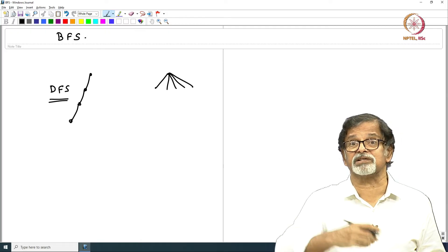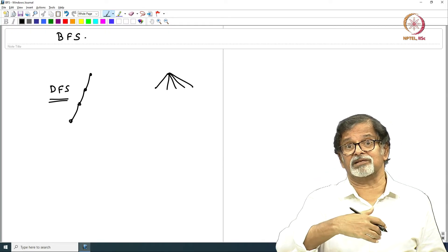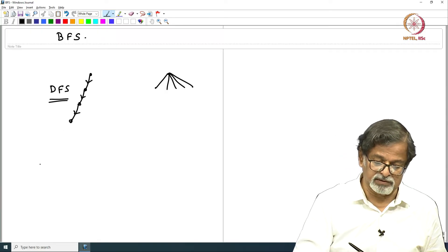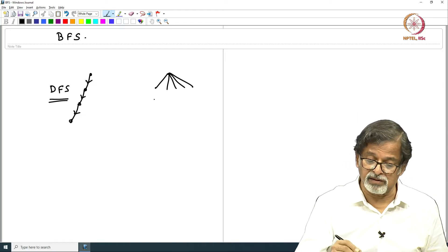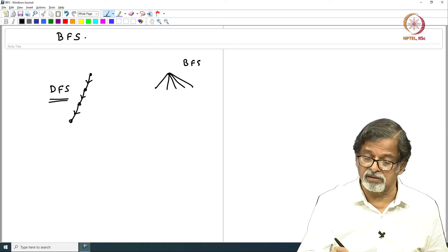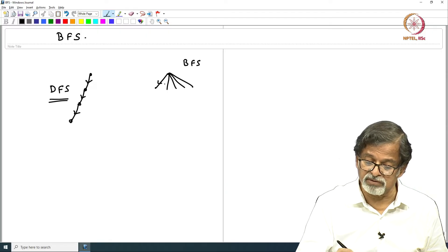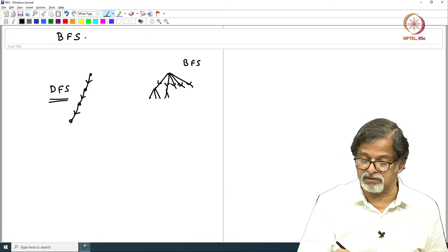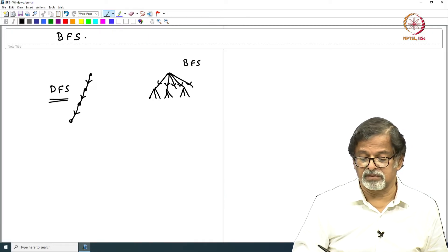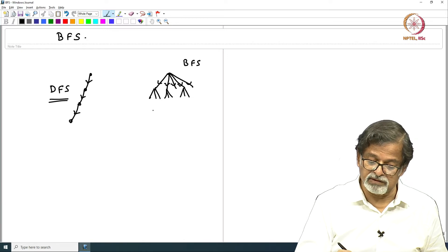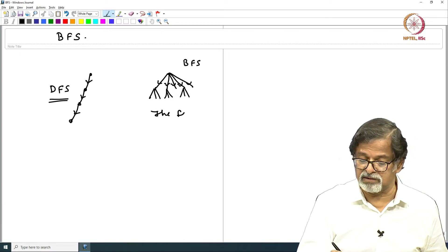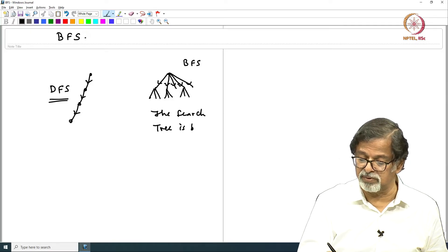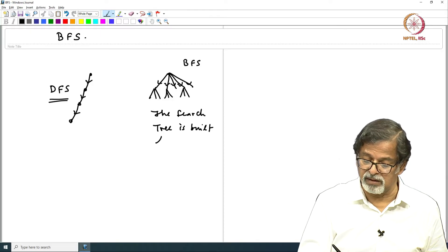The search tree in DFS is built by chain going downwards. You have a neighbor and breadth is here, it is level by level. First you would pick up this, then this. So in BFS the search tree is built level by level.